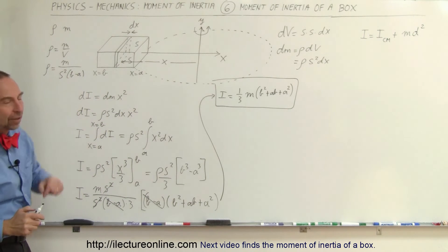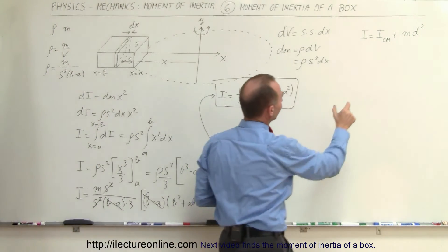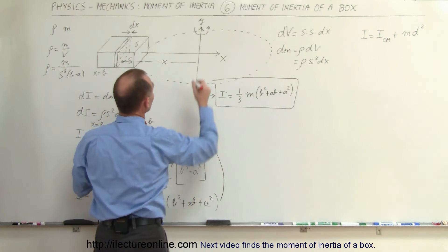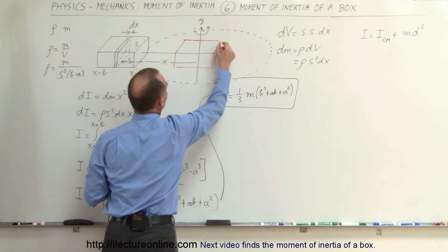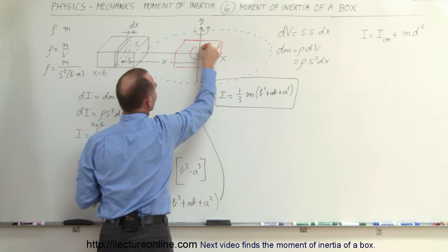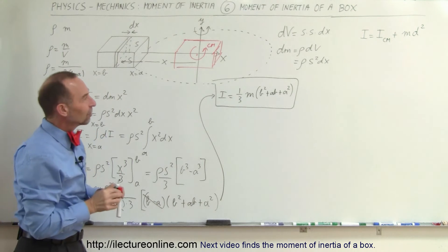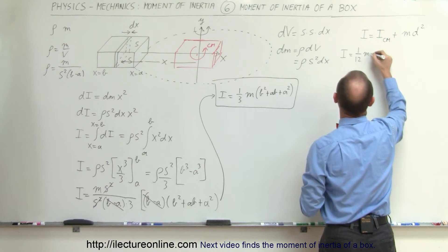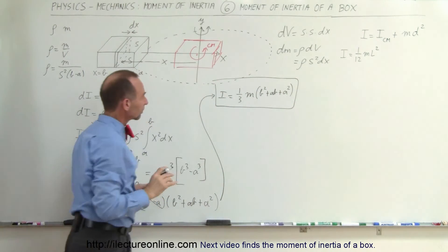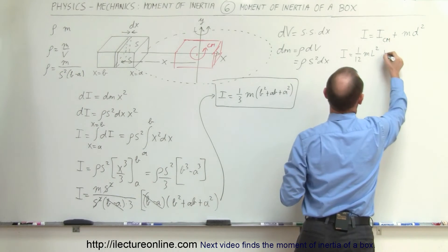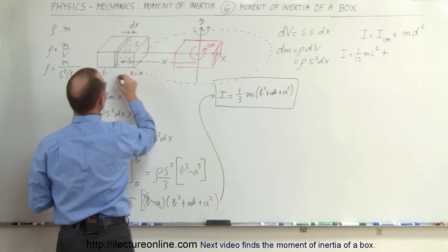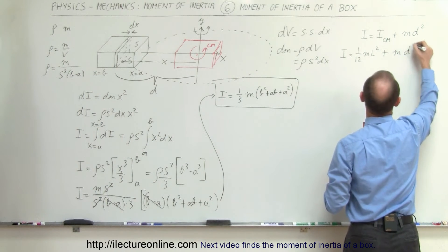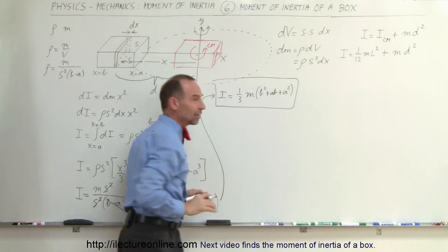Now we could also find this using the parallel axis theorem. We first find the moment of inertia when the box has its center of mass right at the axis of rotation — that would be one-twelfth mL squared. Then if we move the box away a distance d, we add an md squared term. The length of the box is b minus a, so I equals one-twelfth m times (b minus a) squared plus m times d squared. The distance d is halfway between x equals b and x equals a, so d equals (b plus a) divided by 2.